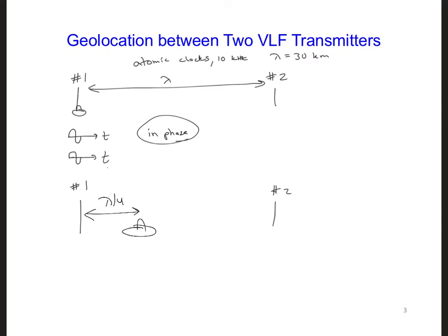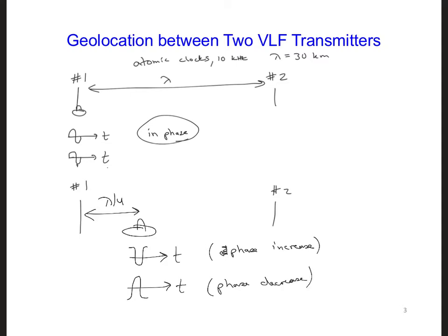At a quarter of a wavelength from station number one, the signals are 180 degrees out of phase. The signal from station one has a phase increase — starting at the top — and the signal from station two has a phase decrease — starting at the bottom. So at one quarter of a wavelength away from station one, the two signals are completely out of phase.